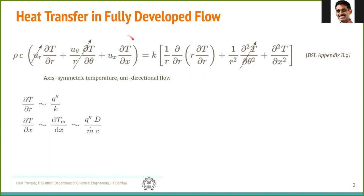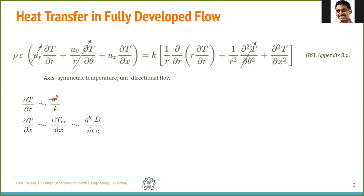Now let us look at the magnitudes of the remaining terms to see if we can make further simplifications. We consider the derivative of temperature with respect to r (radial direction) and with respect to x (axial direction). If q″ is the local heat flux from the walls, then by definition q″ = k·(∂T/∂r), so ∂T/∂r scales as q″/k. This is an order-of-magnitude estimate for the temperature variation in the radial direction.